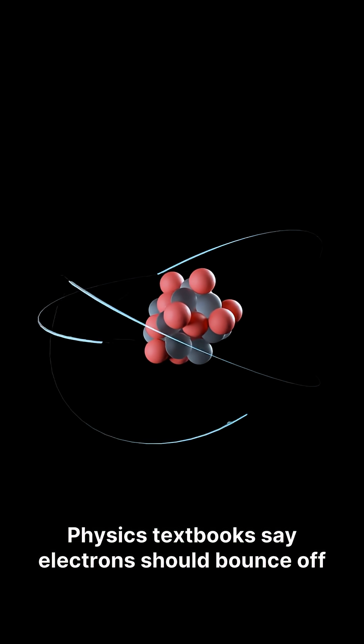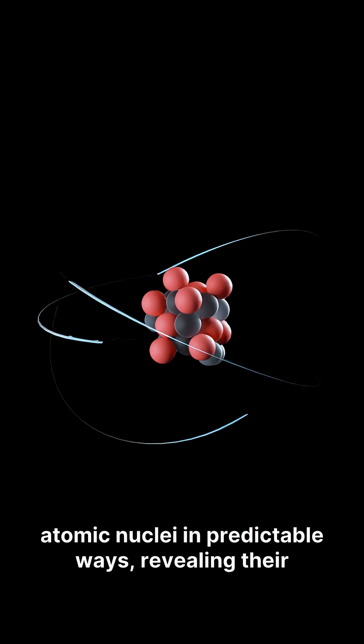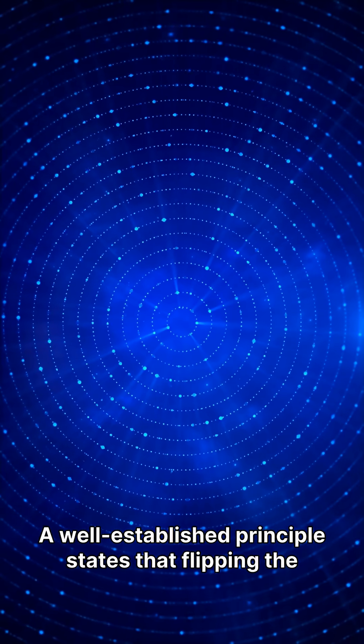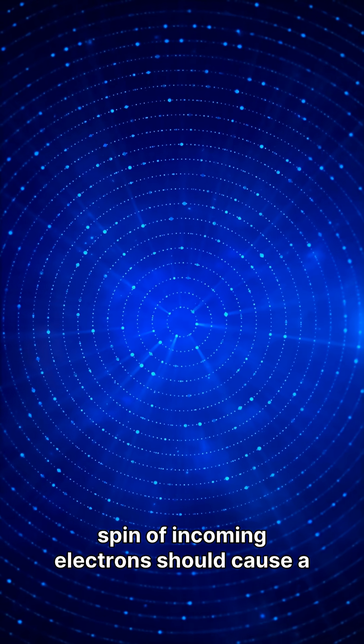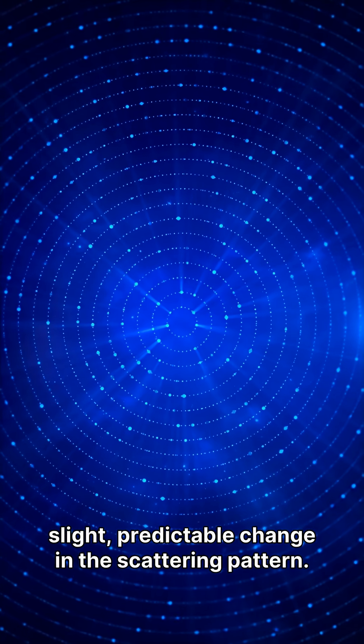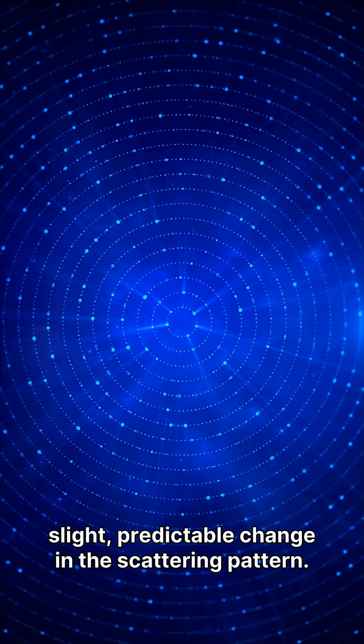Physics textbooks say electrons should bounce off atomic nuclei in predictable ways, revealing their inner structure. A well-established principle states that flipping the spin of incoming electrons should cause a slight, predictable change in the scattering pattern.